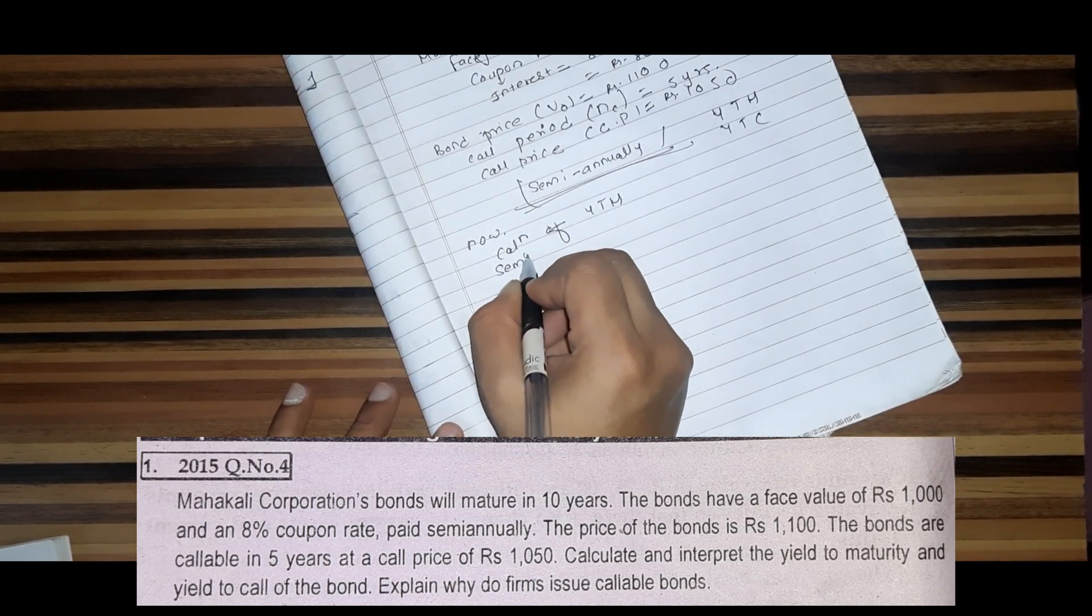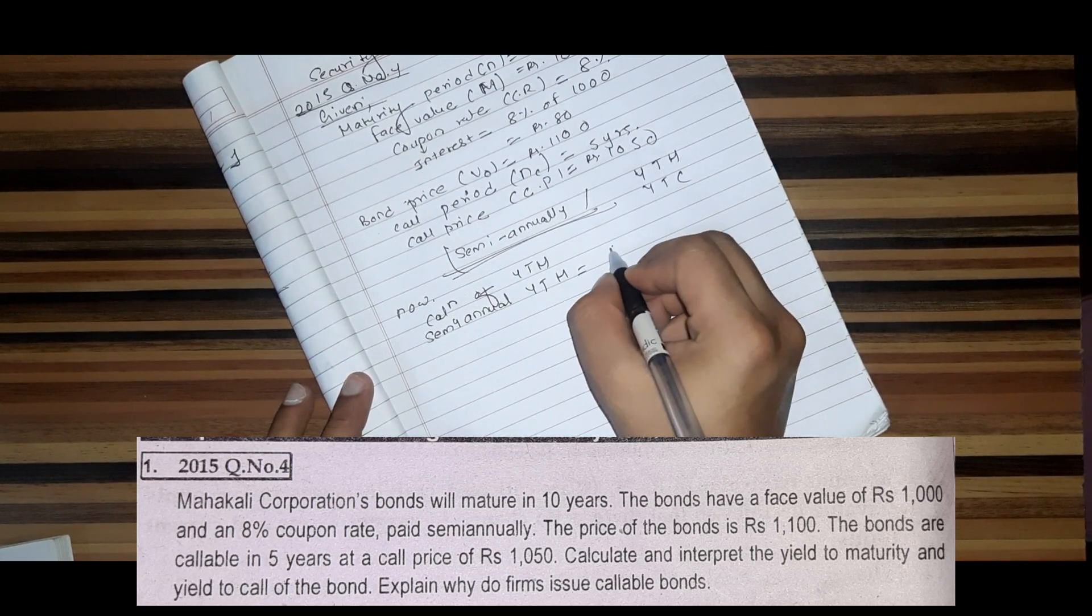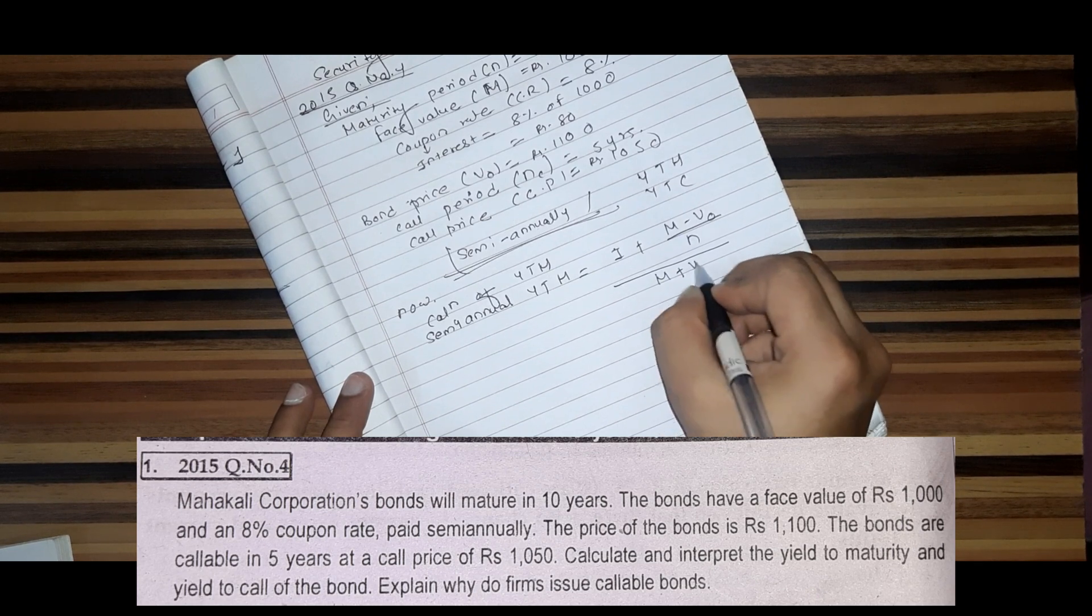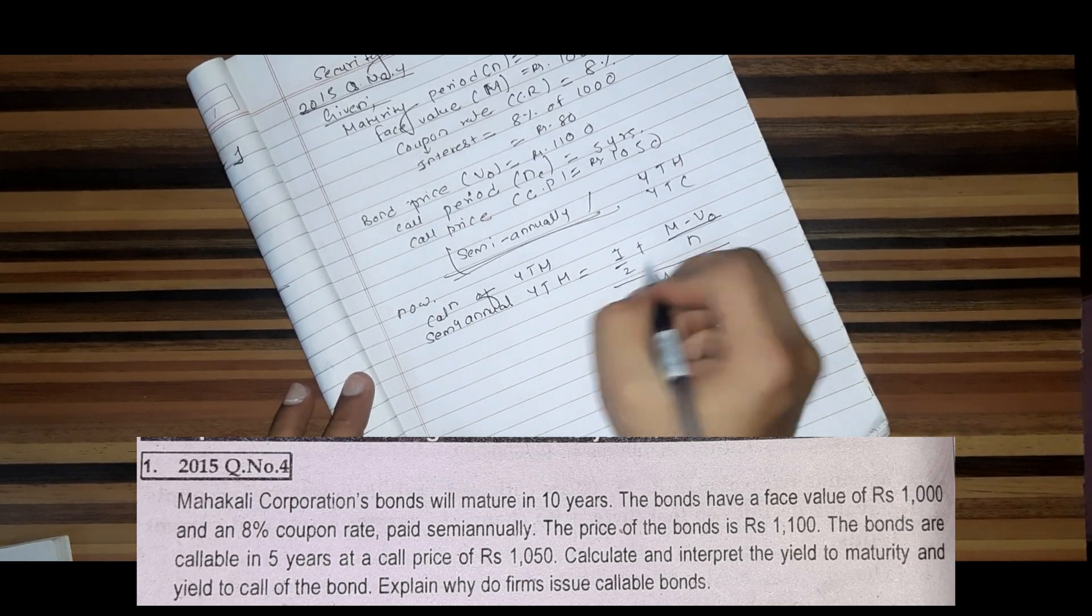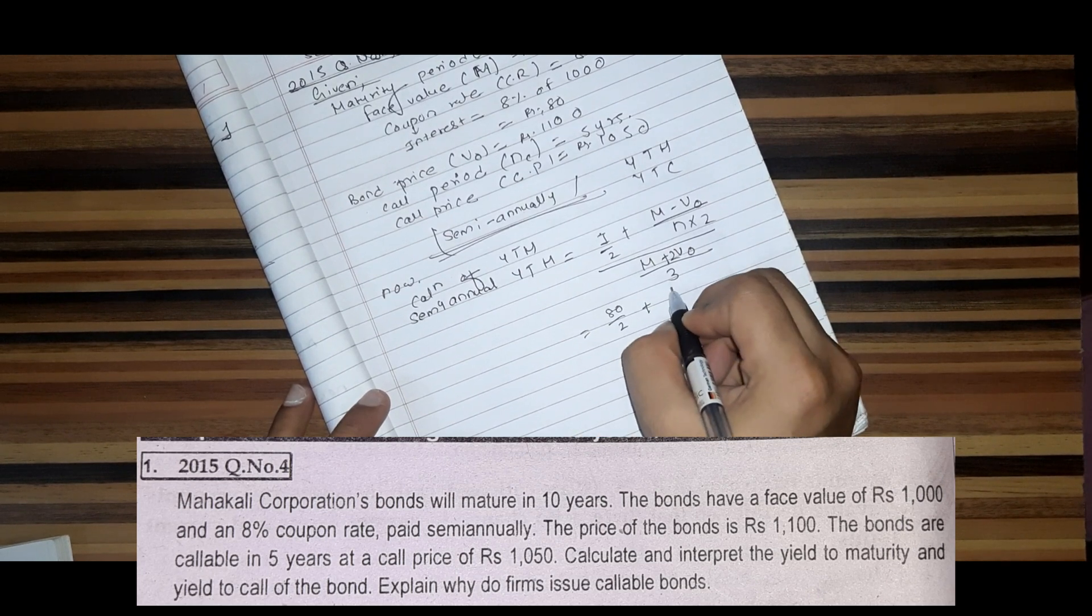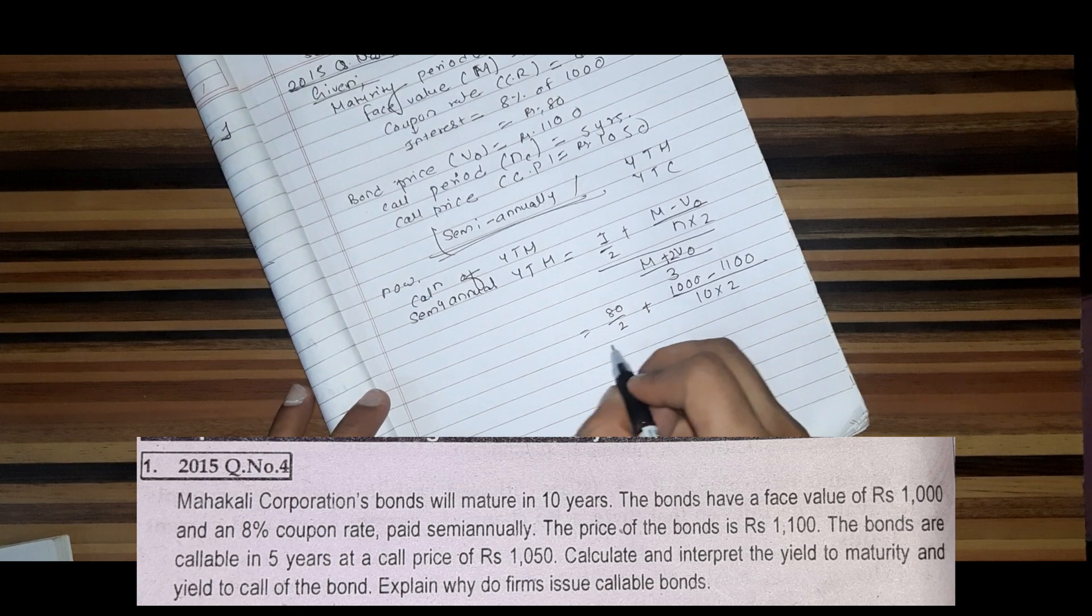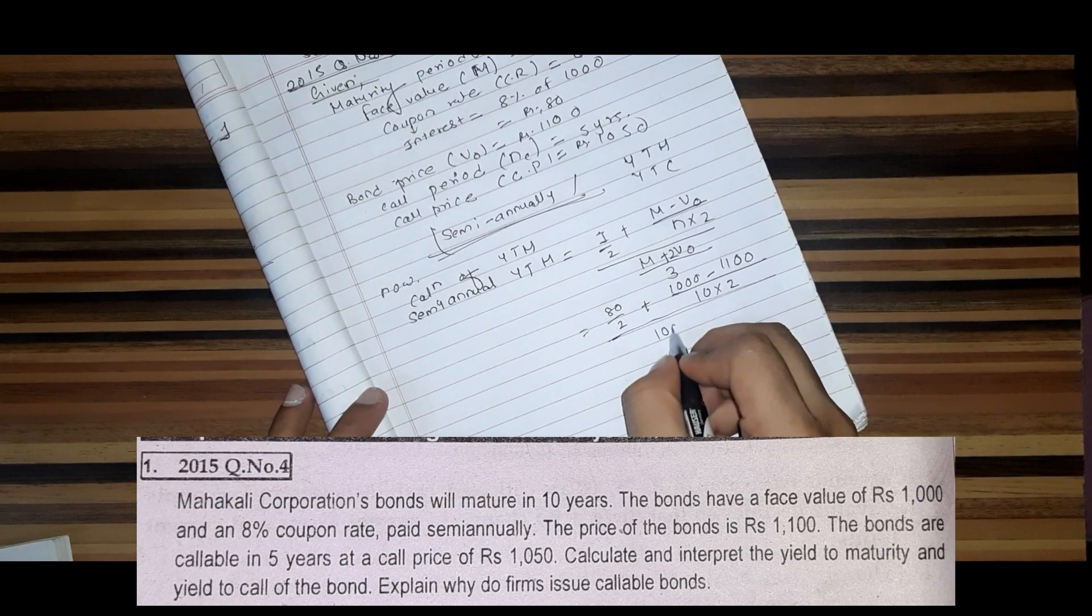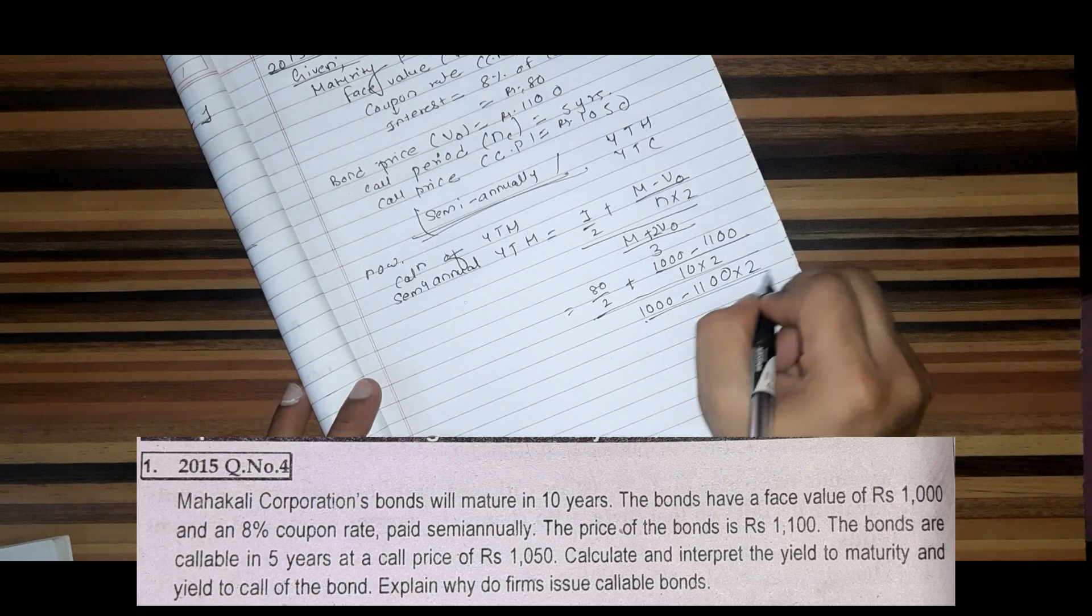I will calculate the semi-annual YTM. The formula is: I plus YM minus V0 divided by N, all divided by YM plus V0 divided by 2. Semi-annual equals 8 divided by 2 plus YM 1,000 minus V0 1,100 divided by YM 10 into 2.